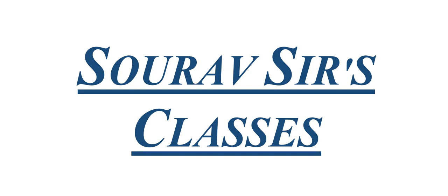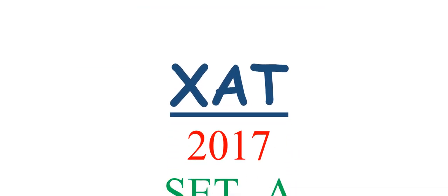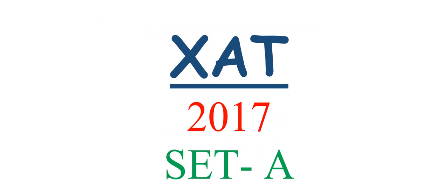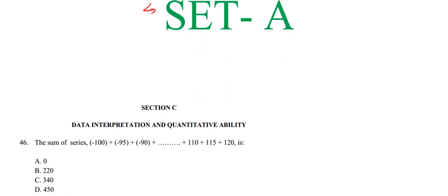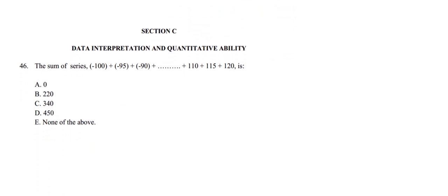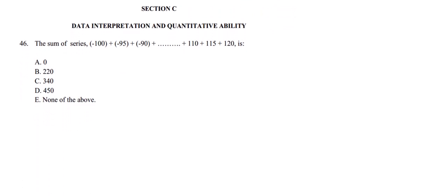Hello students, welcome to Sorrel Sir's classes. Today we are going to solve the 2017 question paper Set A. We will begin with Section C first and solve the other sections afterwards. Section C is Data Interpretation and Quantitative Ability.